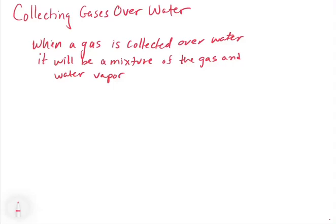In this video, we're going to look at the specific case of collecting gases over water. This is an extension of Dalton's Law of Partial Pressure. It turns out that when a gas is collected over water, it will be a mixture of the gas and water vapor.